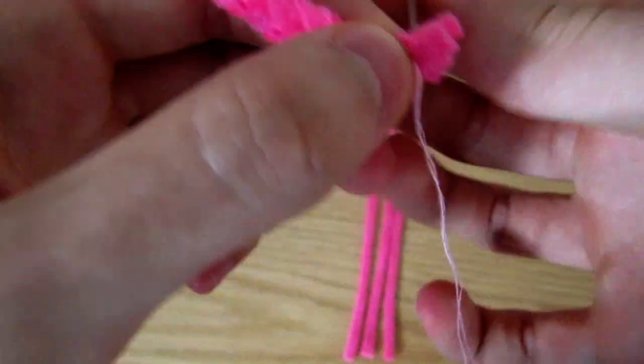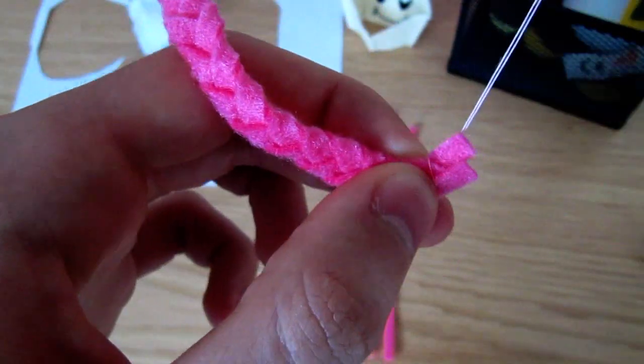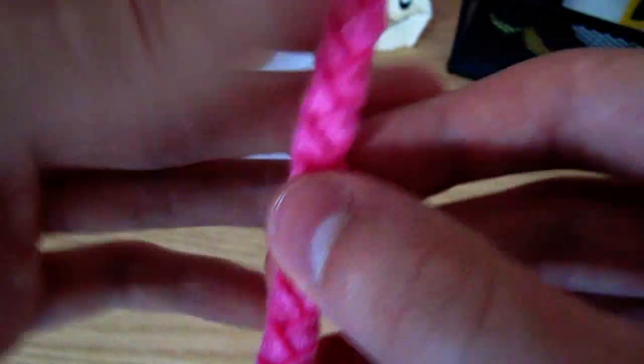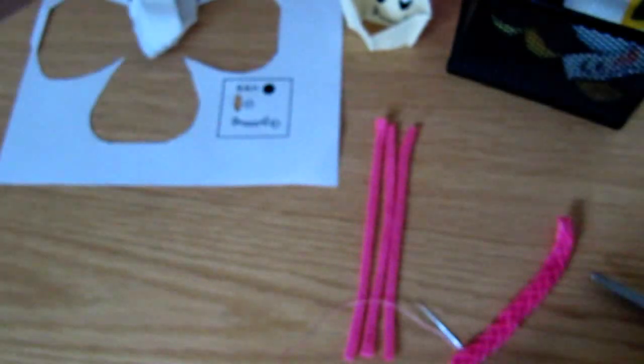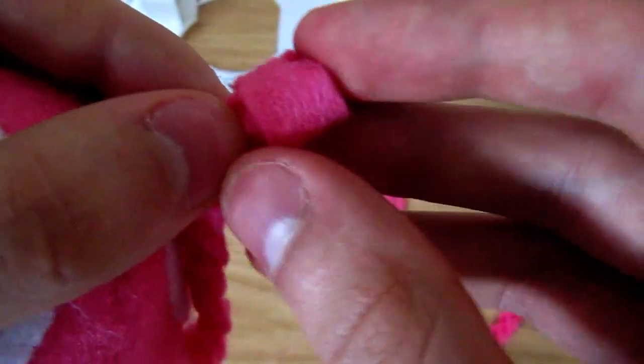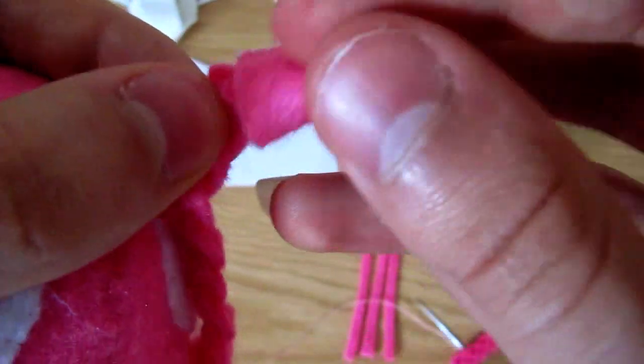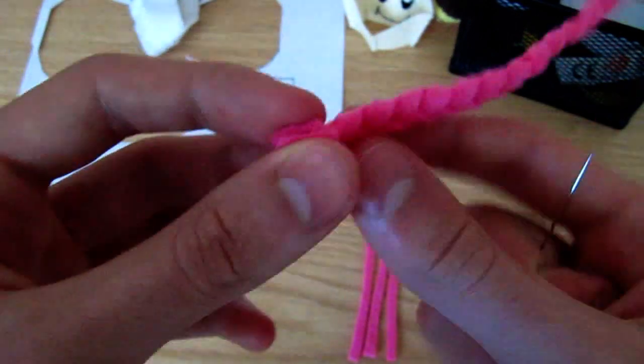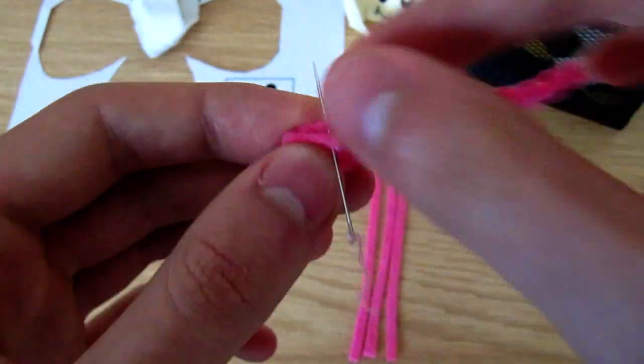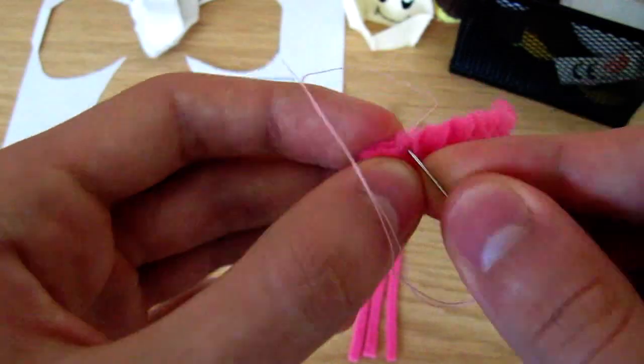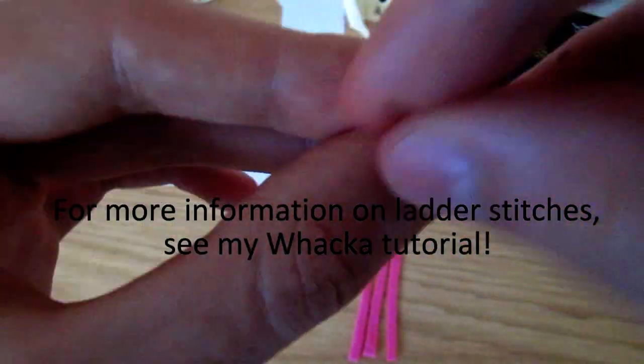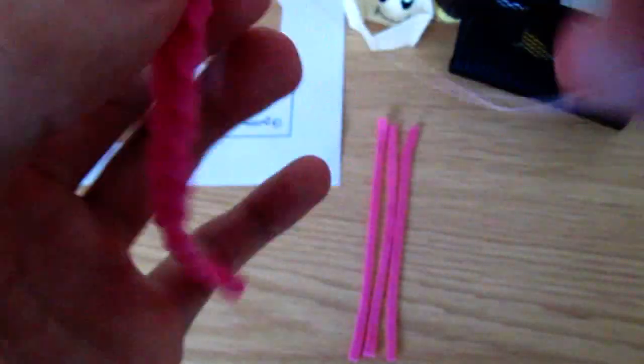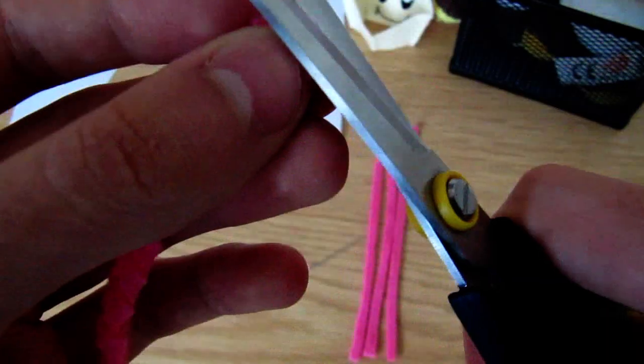When you get to the bottom, sew it up with more pink thread. We're going to cover the end with a small pink band so it looks neater. The easiest way to do this neatly is to start off as normal, then do a ladder stitch. Finish off and repeat all this for the other side.